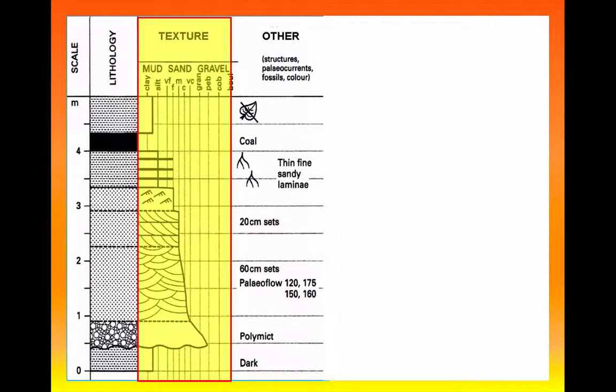We can see for example that the bed near the bottom there, the conglomerate bed shown with the circle symbol labeled up polymict, is actually at its base pebble size. Near the top of the bed we can see it goes down to a very coarse sand. So we're seeing a change in the grain size, we're seeing what the grain size is.